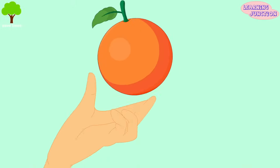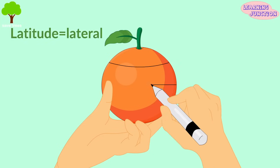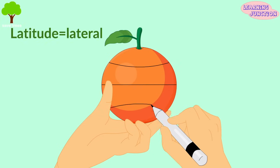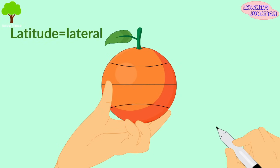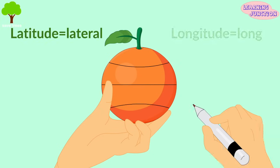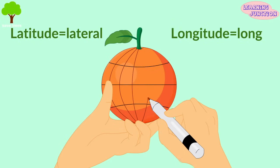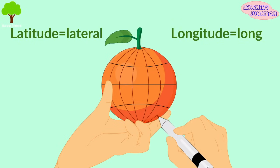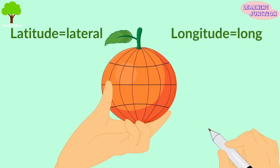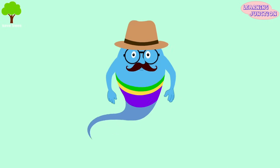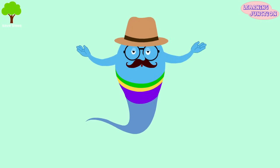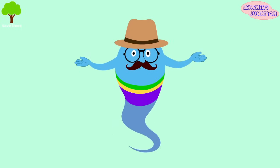An easy way to remember the orientation is that latitudes are lateral and longitudes are long. Let's learn about them one by one.